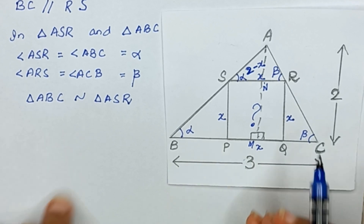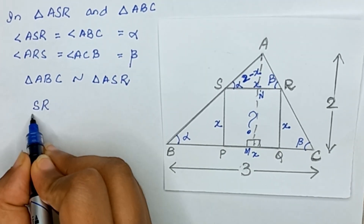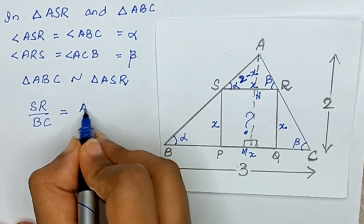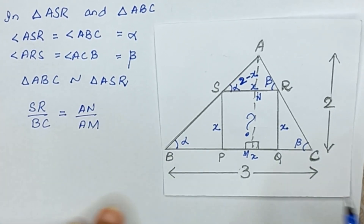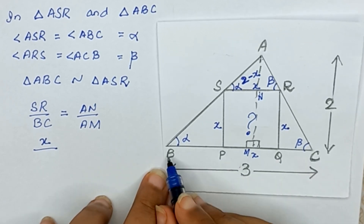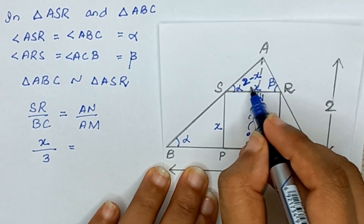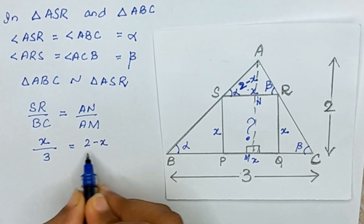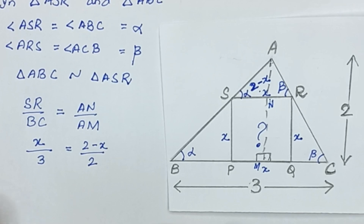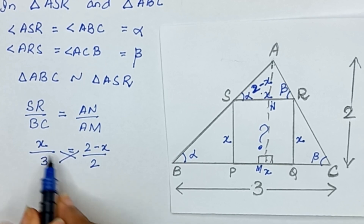Since the triangles are similar, the ratio of their bases equals the ratio of their heights: SR divided by BC equals AN divided by AM. Here SR equals x, BC equals 3, AN equals 2 minus x, and AM equals 2.